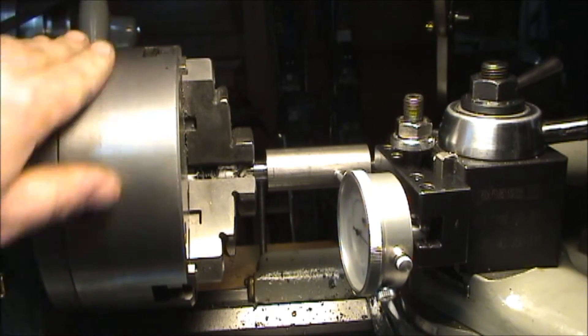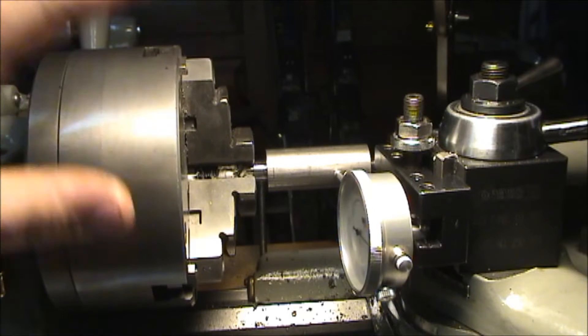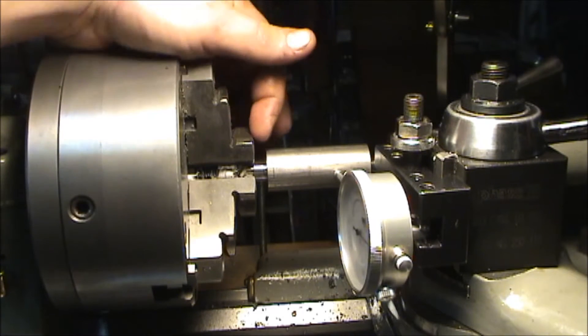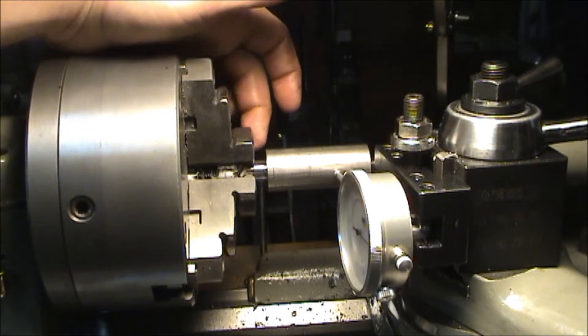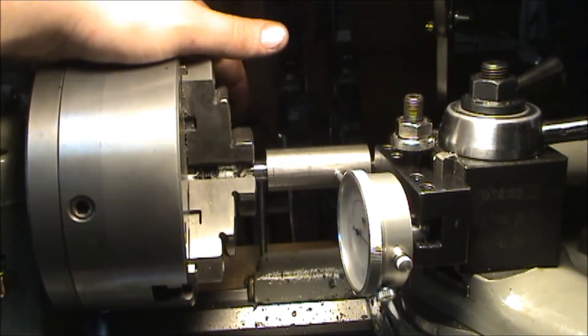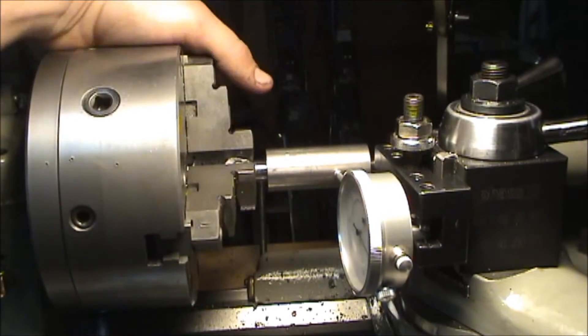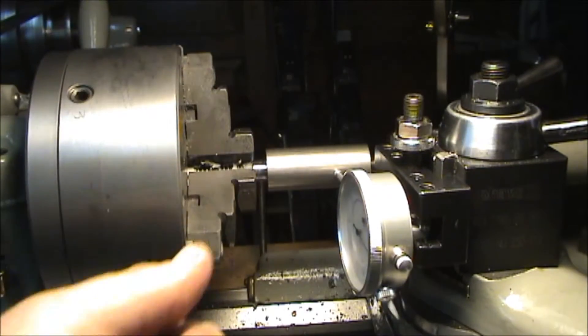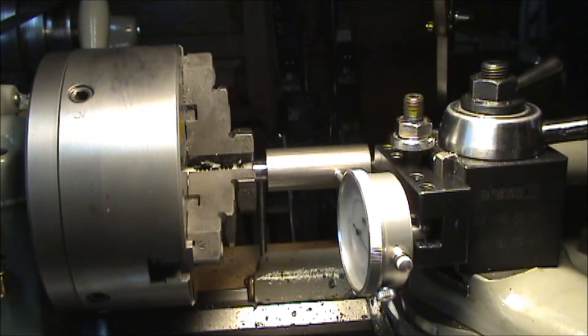But when you flip this around, you're gonna need some way of adjusting it, so you're gonna need a four jaw or something of the like, or you're gonna have to take the pain in the ass route of shimming each jaw individually to get this to run straight. You want everything concentric. You don't want any wobble in that shaft, otherwise it's gonna bind as you move your screw.